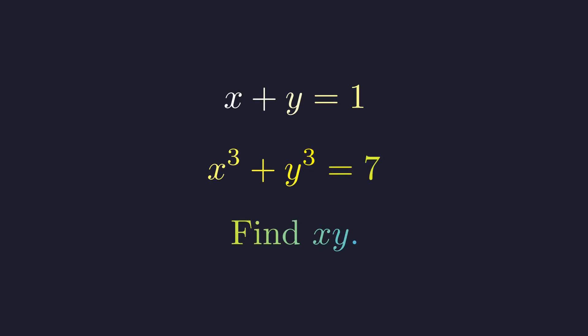So here's a fun little puzzle. We're given that x plus y equals 1 and x cubed plus y cubed equals 7. The question asks us to find x times y.